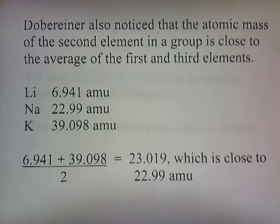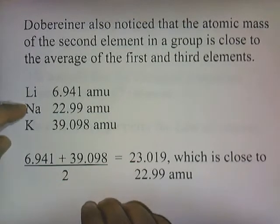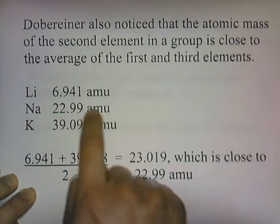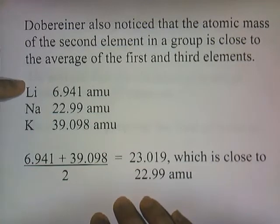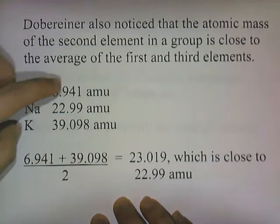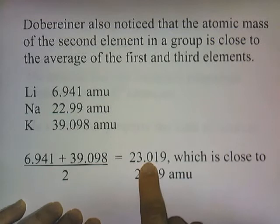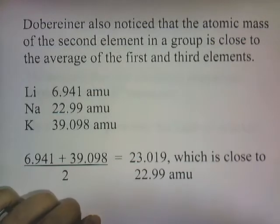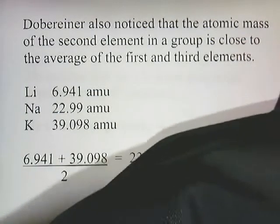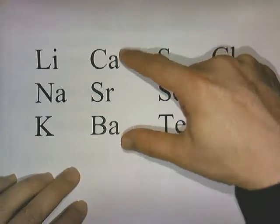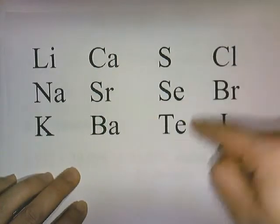Döbereiner also noticed that the atomic mass of the second element in a group is close to the average of the first and third elements. In the triad lithium, sodium, and potassium, sodium has an atomic mass of 22.99 amu. If you take the average of lithium (6.941 amu) and potassium (39.0928 amu), you get a number very close to sodium's atomic mass. This works for all the triads — for example, the average of calcium and barium is very close to the atomic mass of strontium.